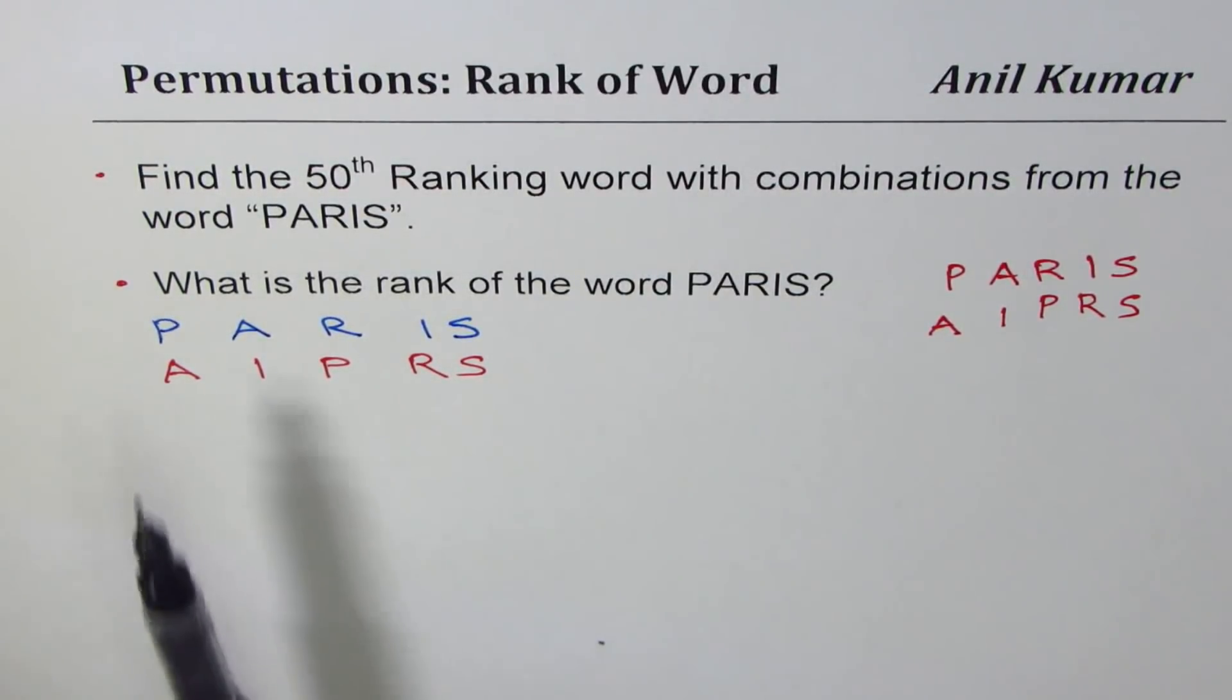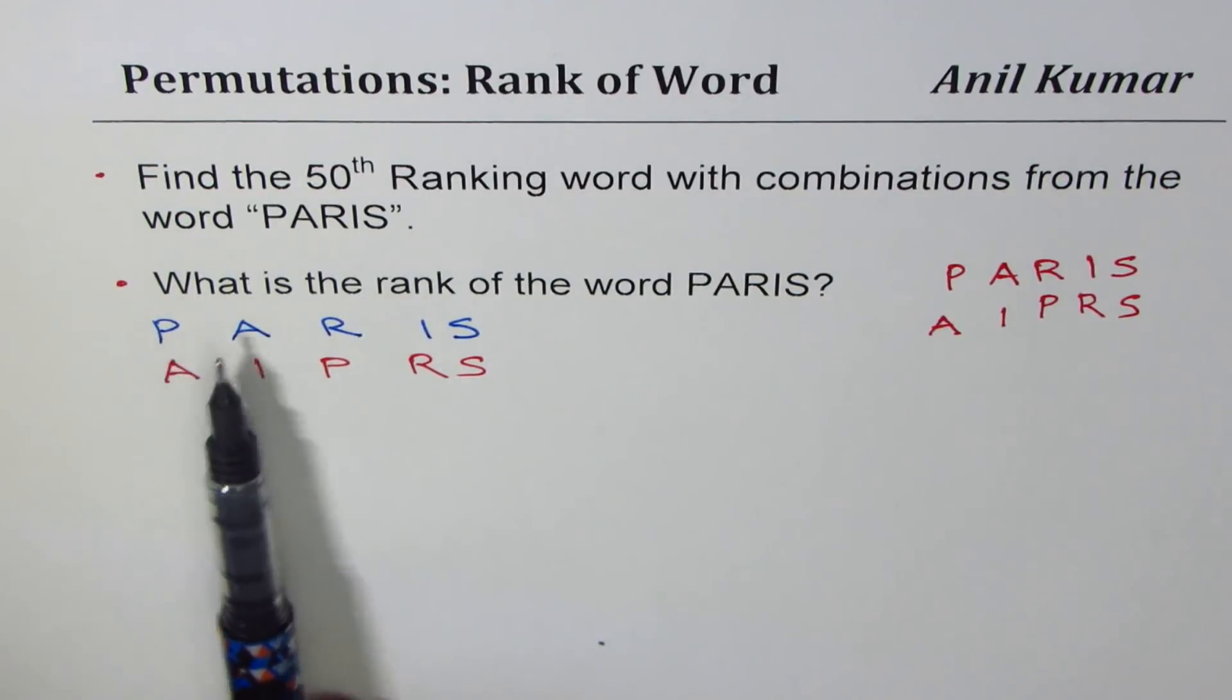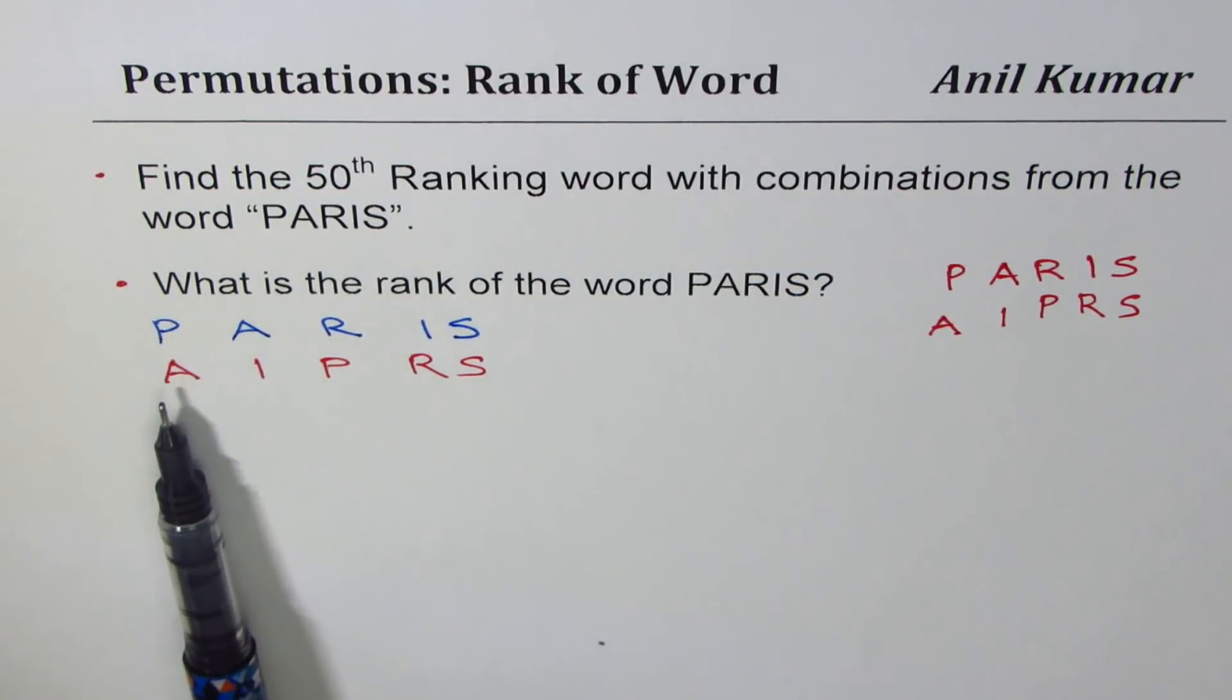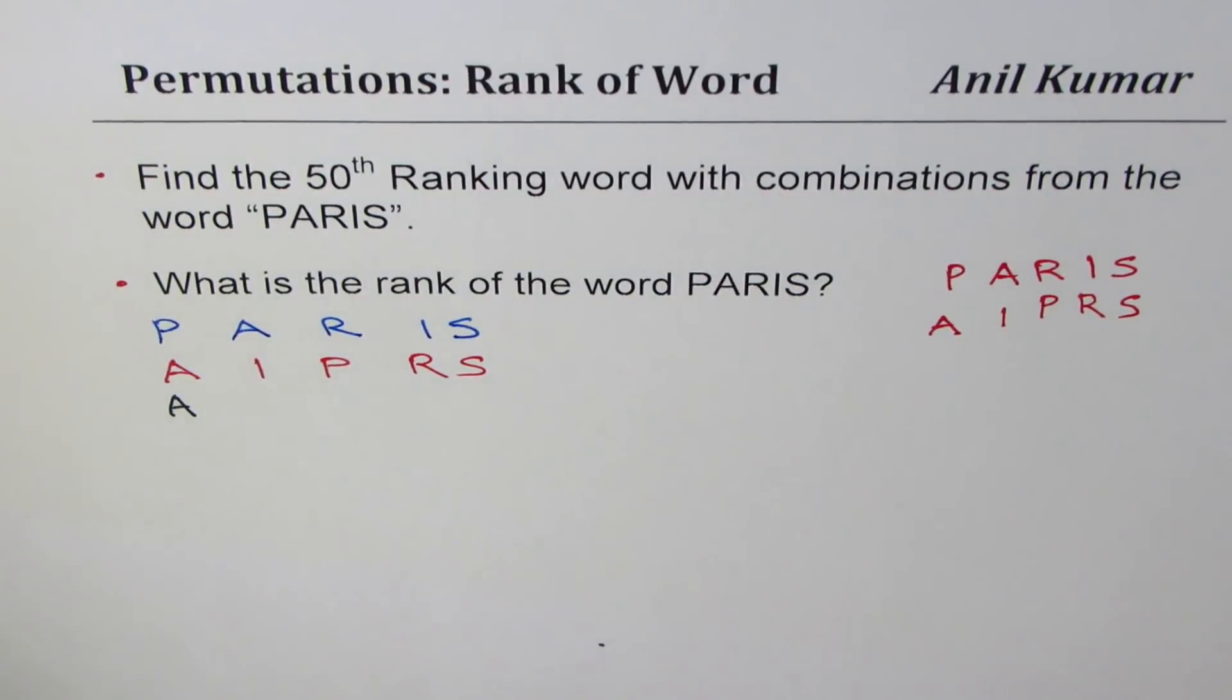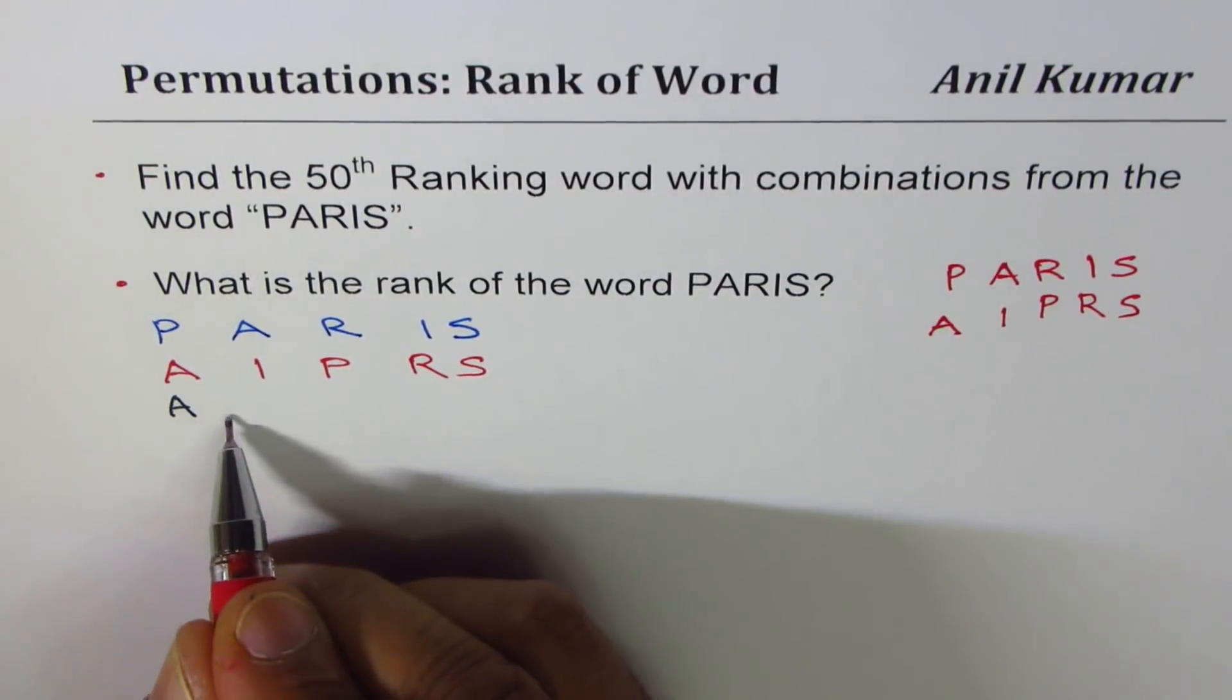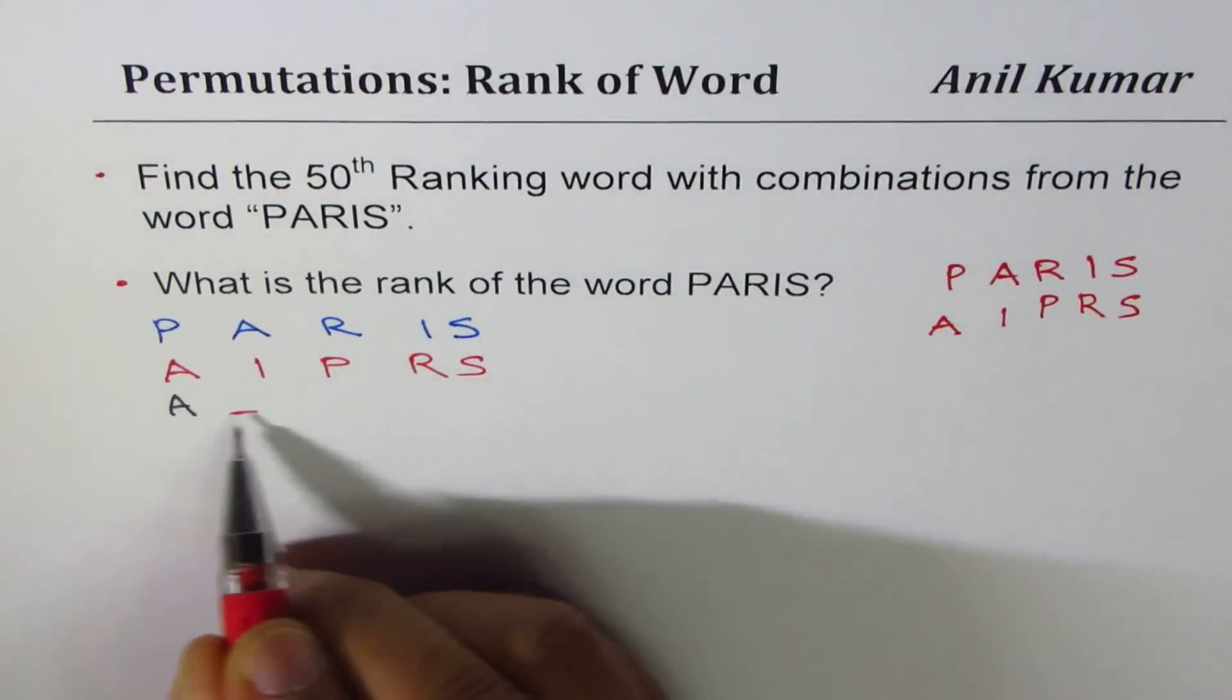Now since we are interested in finding the ranking of Paris, all words starting with A will come before that. So we need to count how many words could come before Paris. So beginning with A, how many words can you have? That is permutation.